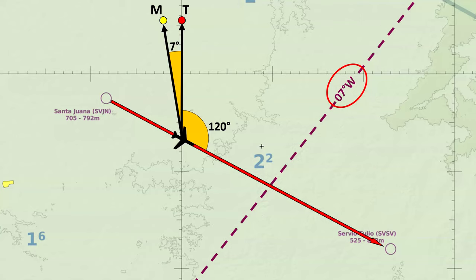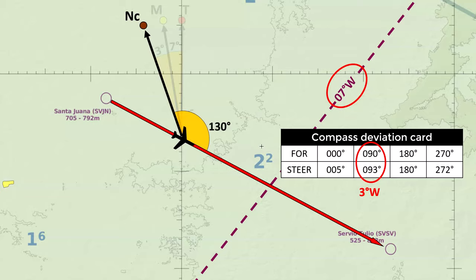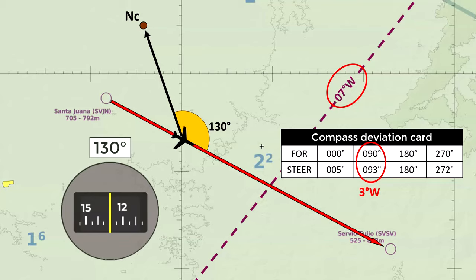We still cannot use 127 as reference on the compass since we haven't applied the compass deviation correction. Using the compass deviation card for this aircraft, for a desired magnetic heading of 127 the closest published value is 090, and for that heading the compass deviation is plus three degrees, also expressed as three degrees west. This means compass north is three degrees west of magnetic north. Having applied all corrections, we obtain a compass heading of 130, which is the heading to be set on the compass while flying this leg.